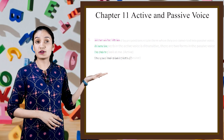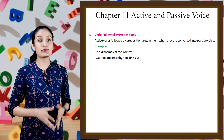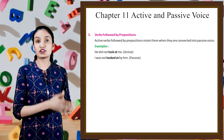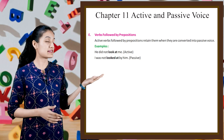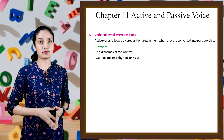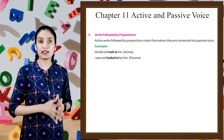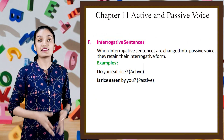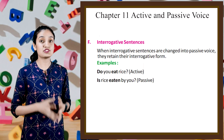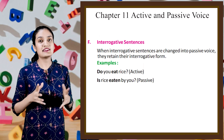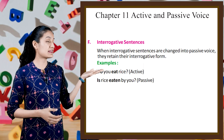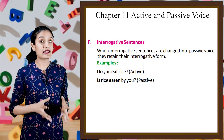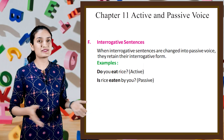Next is verbs followed by prepositions. Active verbs followed by prepositions retain them when they are converted into passive voice. Example: 'He did not look at me' (active) — 'I was not looked at by him' (passive). Next is interrogative sentences. When interrogative sentences are changed into passive voice, they retain their interrogative form. Example: 'Do I eat rice?' (active) — 'Is rice eaten by you?' (passive).